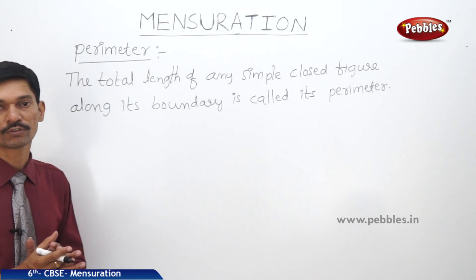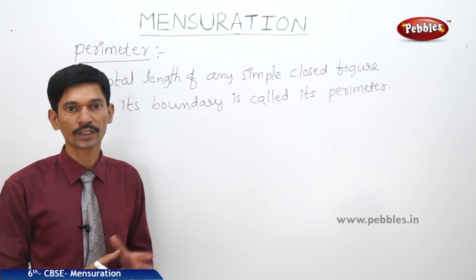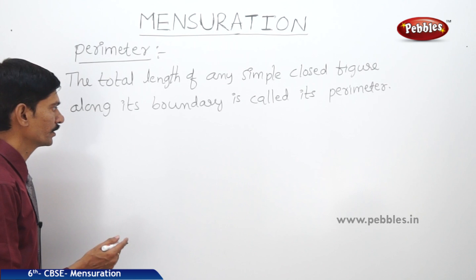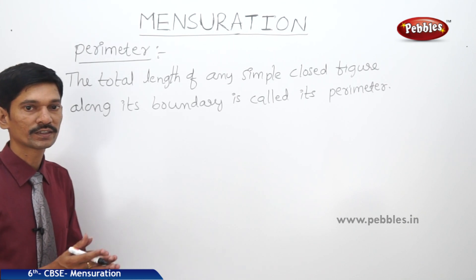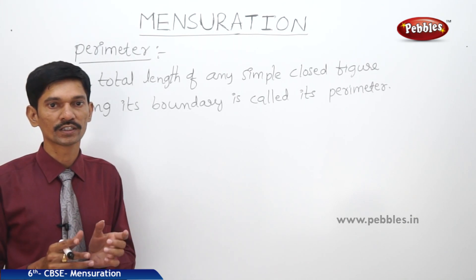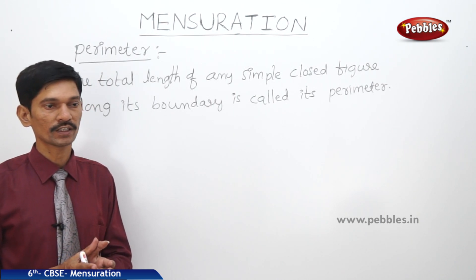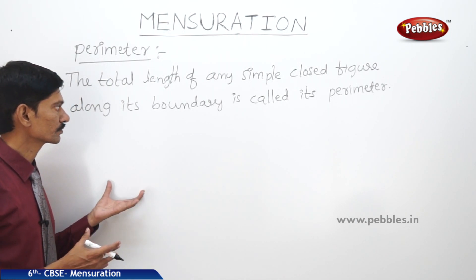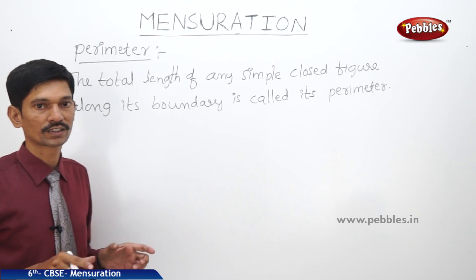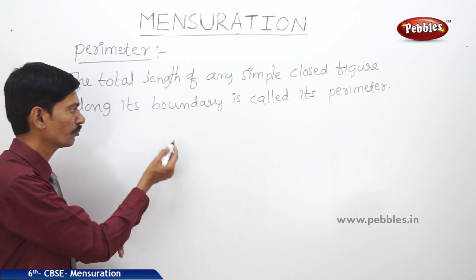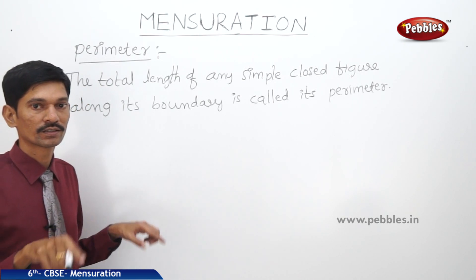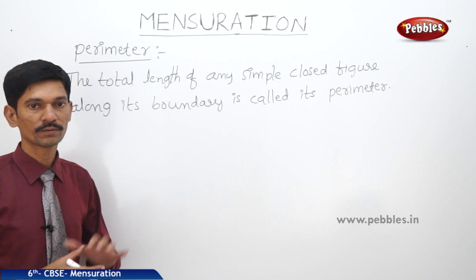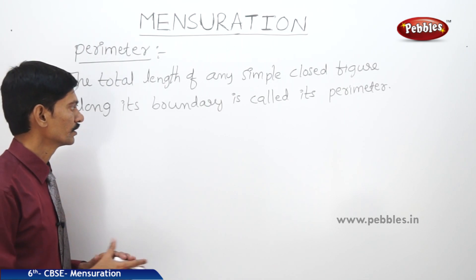What are the situations from our day-to-day life where we need to find the perimeter? For example, if a farmer wants to fence his land along its boundary, we need to find the perimeter of that land. Similarly, if a constructor wants to build a compound wall around his building, we also need to find the perimeter in that case.